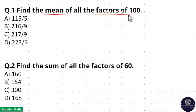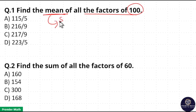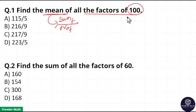Find the mean of all the factors of 100. Mean means average, that is sum of factors divided by total number of factors. Now take the prime factorization of 100.